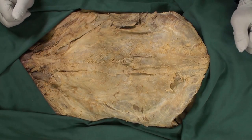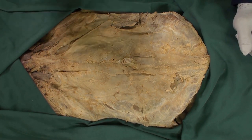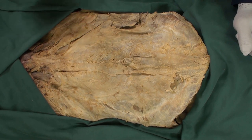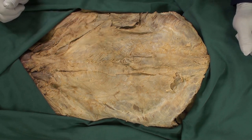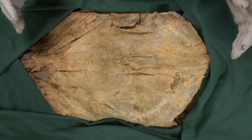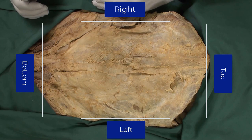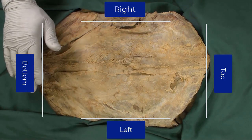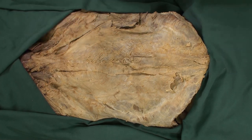Hello everyone and welcome back. In this video, we are going to show you how to remove the anterior abdominal wall and explore the peritoneum and peritoneal cavity, as well as the contents in the peritoneal cavity. We need to orient ourselves to the area. This is the right side of the cadaver, here is the left side, the bottom part, and the top part. Let's begin.